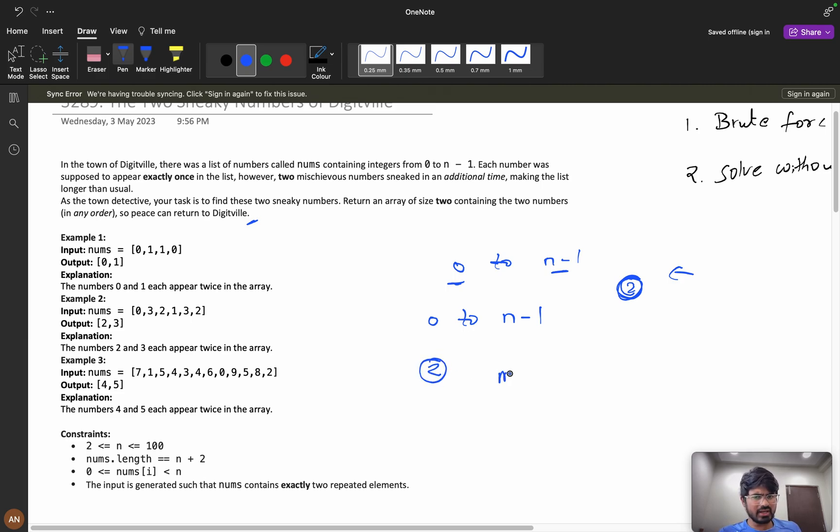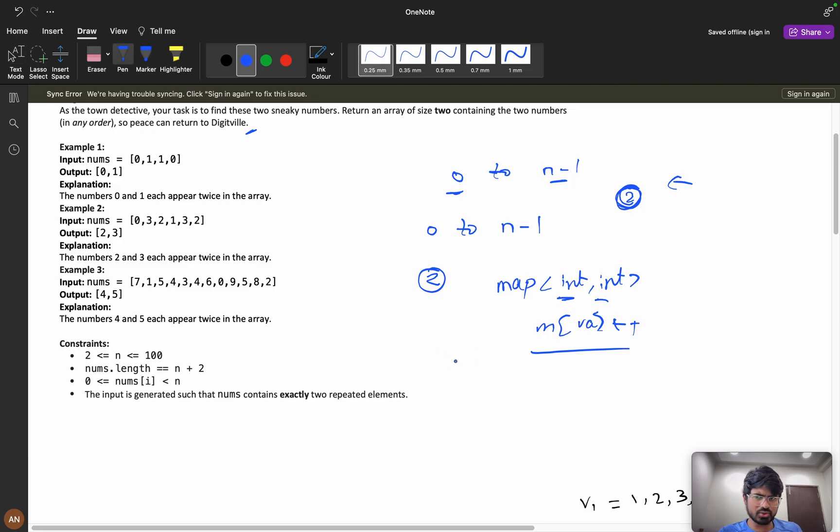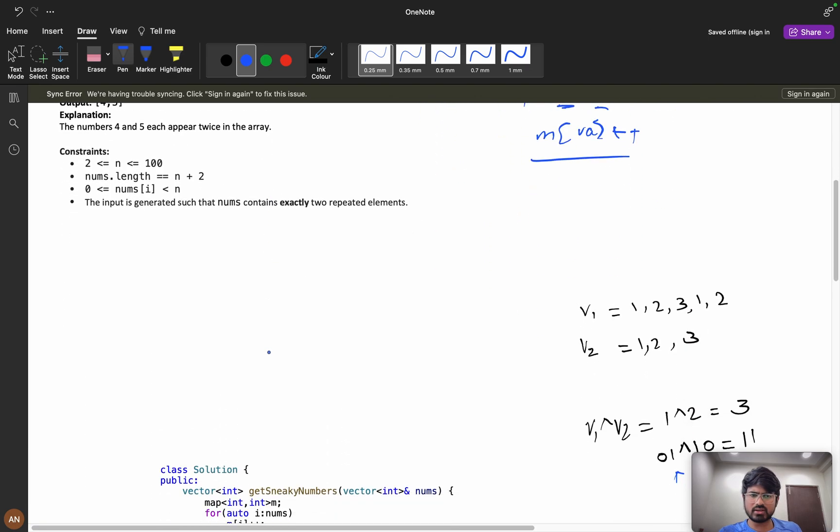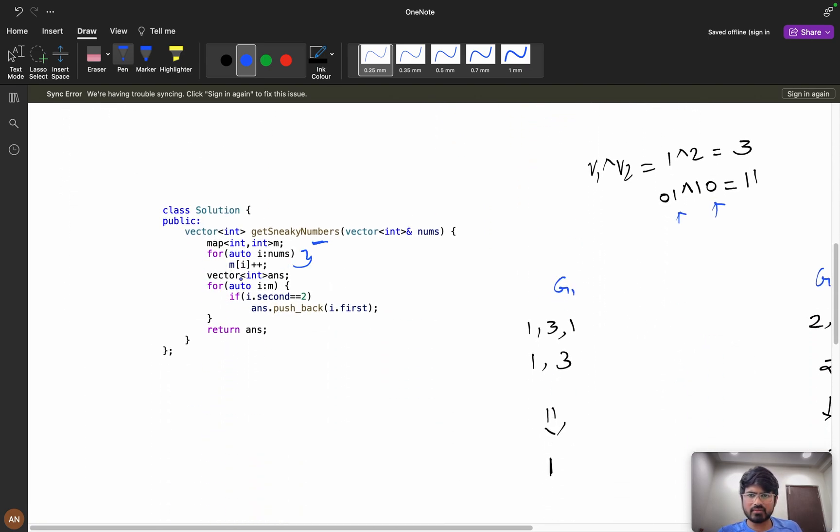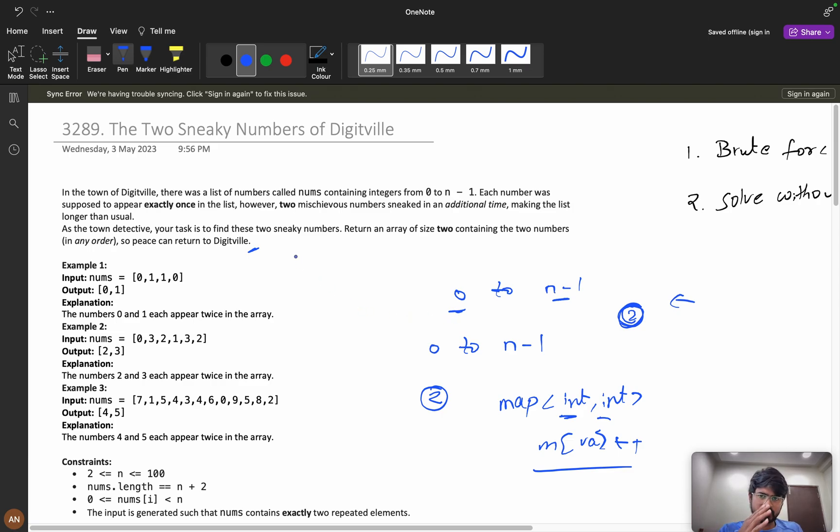So what you can do is directly use map, you can use count int comma int, and you can do m of value plus plus. After getting it, you will iterate the map and you will see whether i dot second equals to two, then you will push into the answer and finally return it. That's how the brute force approach will work. We will increment the counter, then if i dot second equals to two, then answer dot pushback i dot first, and finally we will return the answer.